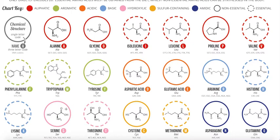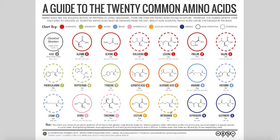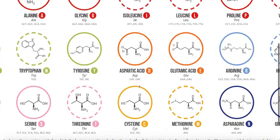Serine and threonine have OH groups, which makes them great hydrogen bonding candidates. Cysteine and methionine are special because they have sulfur in them. Cysteine likes to form disulfide bonds — that happens when the sulfur gets oxidized and forms a bond with another cysteine's sulfur, and that product is called cystine. So you get oxidation from cysteine to cystine. Organic chemists call losing a hydrogen oxidation, and gaining a hydrogen reduction.